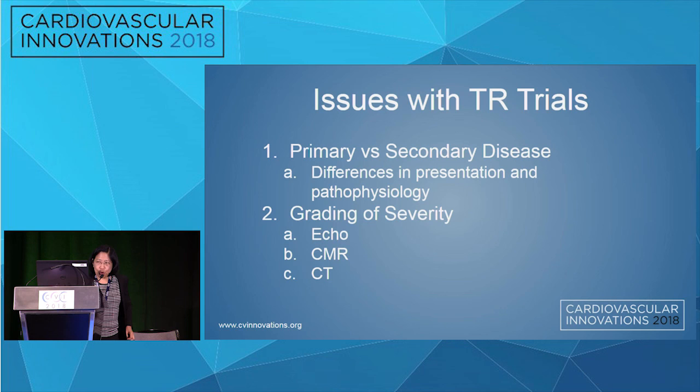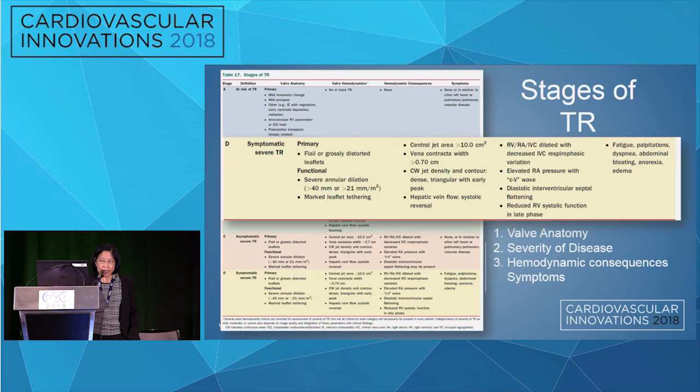The issues with tricuspid regurgitation: first, distinguishing primary versus secondary disease, since there are significant differences in presentation and pathophysiology. Then the grading of severity — because it's only severe disease that currently has surgical indications. The guidelines separate disease into stages A, B, C, and D, and for severe symptomatic patients you must first determine the morphology, then quantify valve hemodynamics using jet area, vena contracta, jet density and contour, and hepatic vein flow reversal.